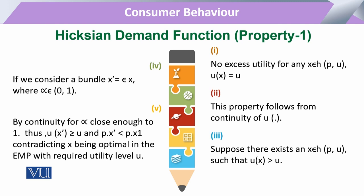Assuming this, we introduce another bundle under the fourth property. The commodity X-prime is also a member of the previous bundle X. There should be a scalar value — not a vector — that denotes any number. This scalar is a member of the number bundle and can range from 0 up to 1.